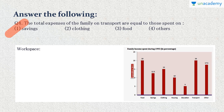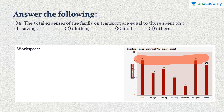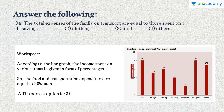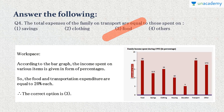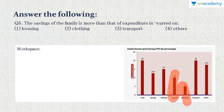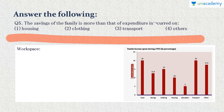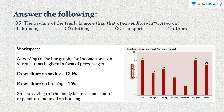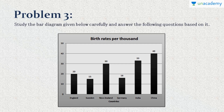Question 4: The total expenses of the family on transport are equal to those spent on — transport is 20%, which is the same as food at 20%. Correct option is food. Question 5: Savings (12.5%) is more than the expenditure incurred on — housing (10%) and education (5%) are both less than savings, but only housing appears in the options. Option 1 is correct.